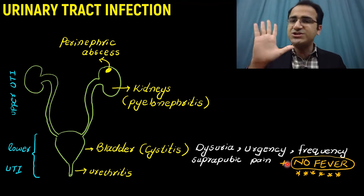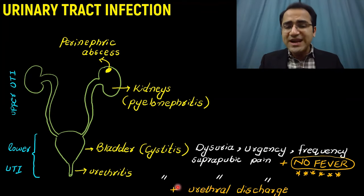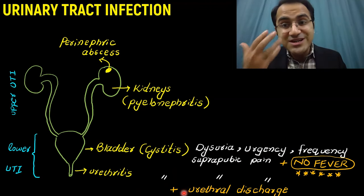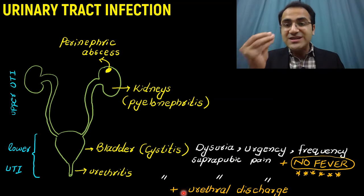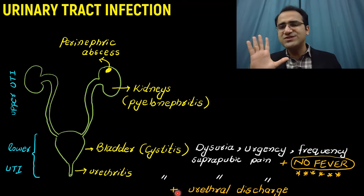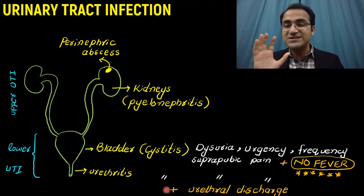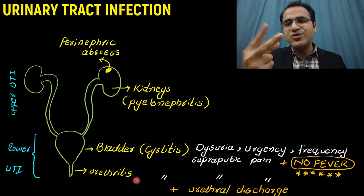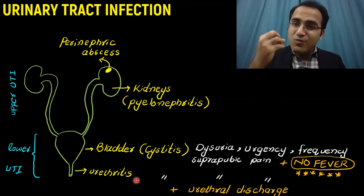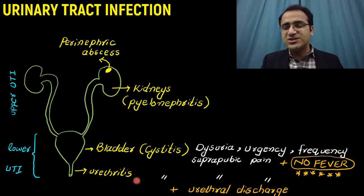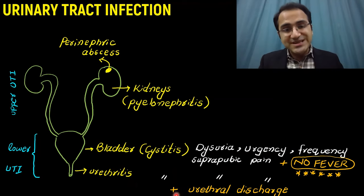That is a very important differentiating point from pyelonephritis. Urethritis will have the same symptoms — dysuria, urgency, frequency — but the patient will also have urethral discharge. Urethral discharge is a sign of urethritis. Urethritis is most commonly caused by two organisms: Chlamydia and gonorrhea. Chlamydia causes a watery discharge and gonorrhea causes a yellow thick discharge.